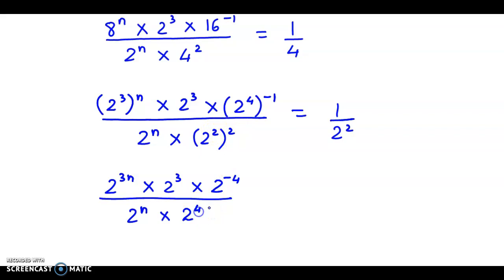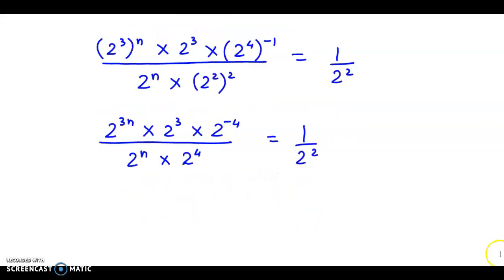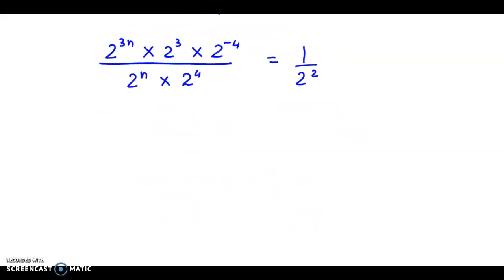Divided by 2 raised to n times 2 raised to 4 equals 1 upon 2 square. So we simplify this further. These all terms in the numerator, so here we go: 2 raised to 3n times 2 cube times 2 raised to minus 4. Now 2 raised to n in the denominator becomes 2 raised to minus n, and 2 raised to 4 becomes 2 raised to minus 4.